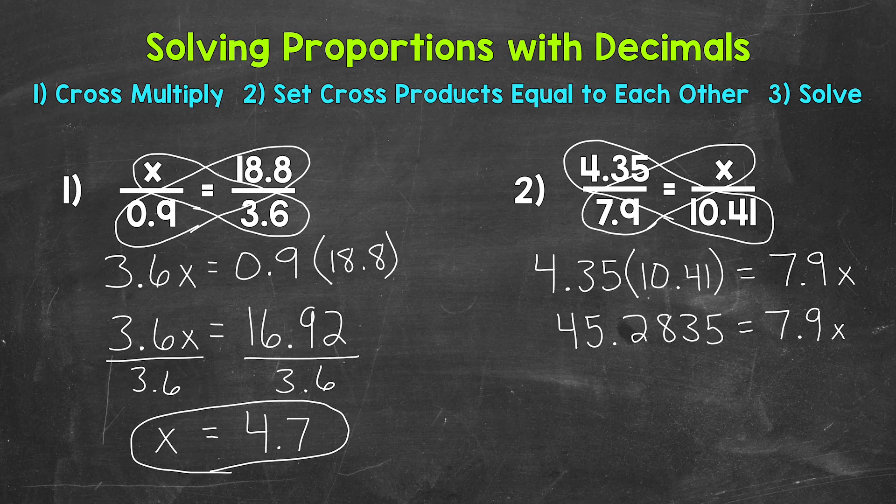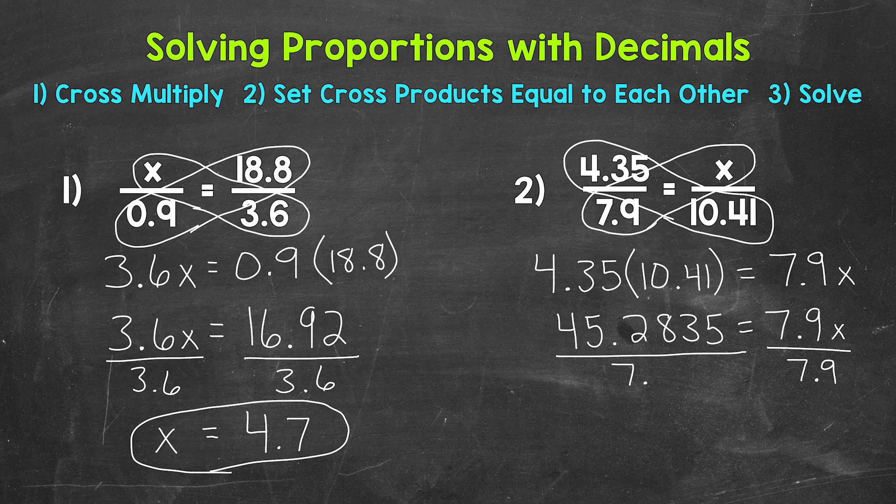Now we have a one step equation that we can solve for x. So we need to isolate that variable of x. We do that by dividing both sides by 7 and 9 tenths. 7 and 9 tenths x divided by 7 and 9 tenths will isolate that variable. We need to do it to both sides to keep this balanced.